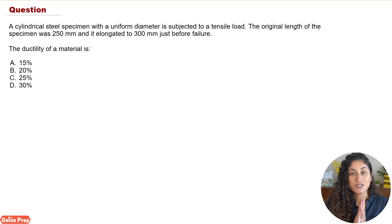Something guys to remember, and this is very important, is that when we're trying to determine the ductility of a material, we can do that in two ways. We can either determine the percent elongation reduction or the percent reduction in area.